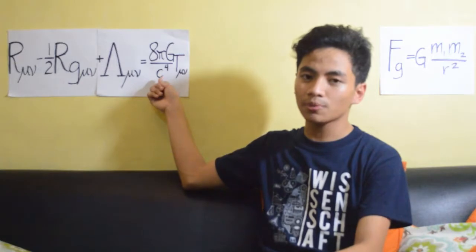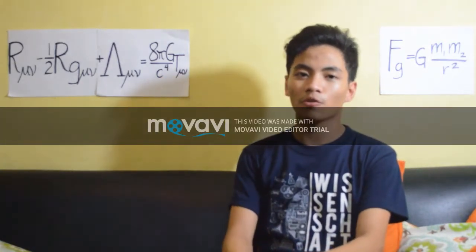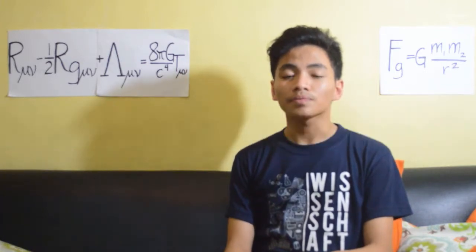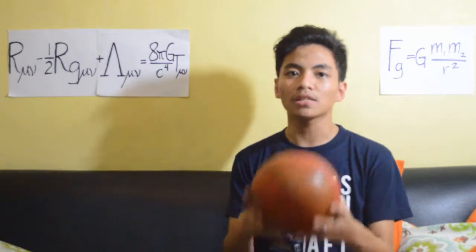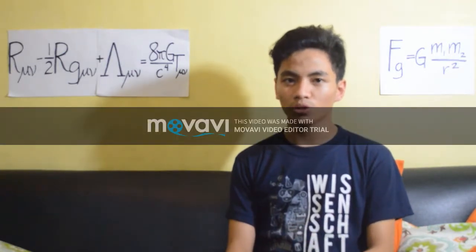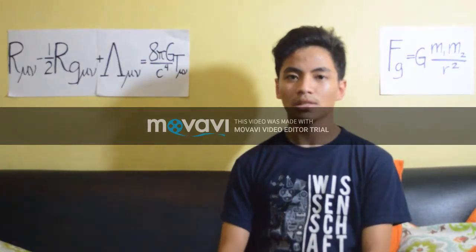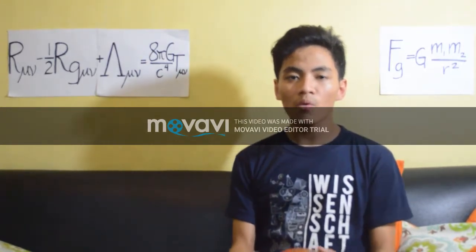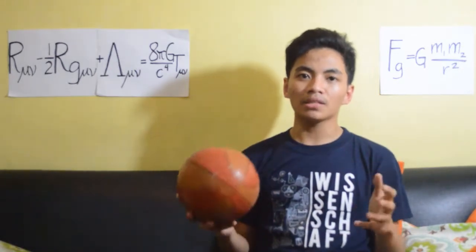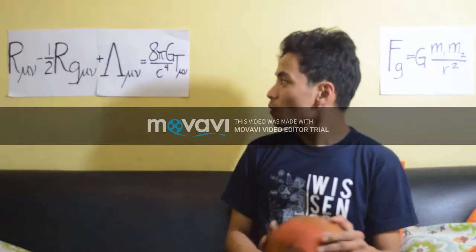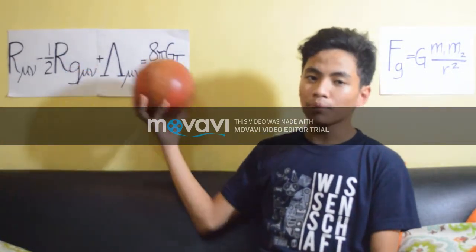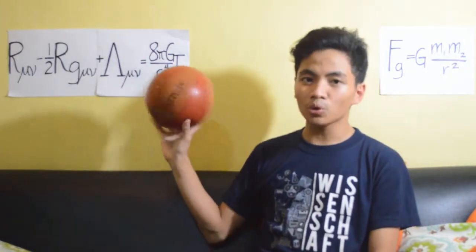The denominator of the expression is c to the fourth, which is the speed of light to the fourth power. On the right-hand side, in the last part, is the stress-energy momentum tensor, which describes how much matter is in space-time — how much matter is moving or in motion within the cosmos. The left-hand side of the equation describes how space-time is curved, and the right-hand side describes how space-time makes objects move.